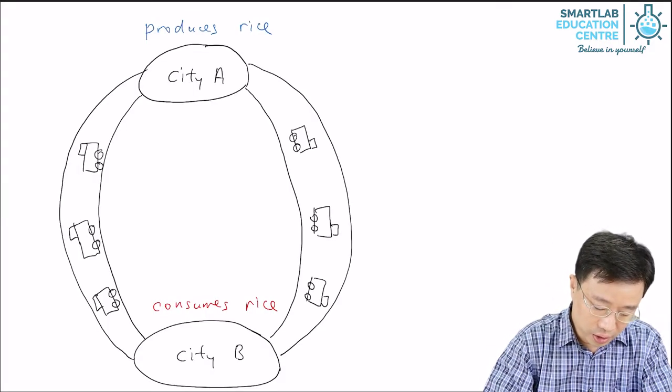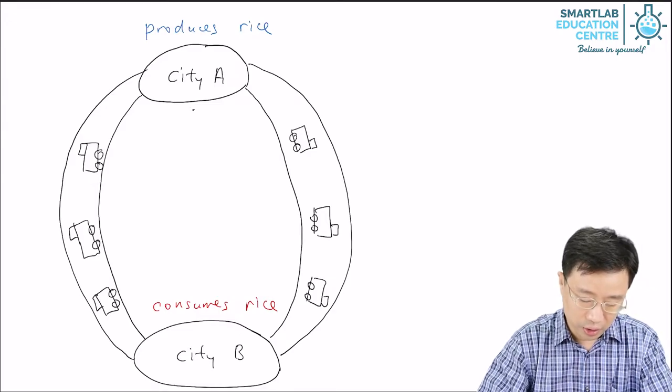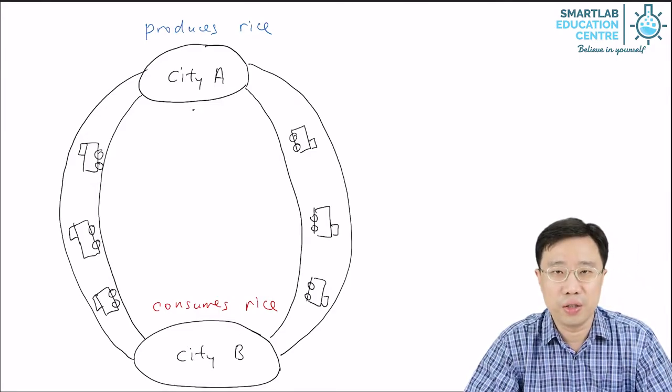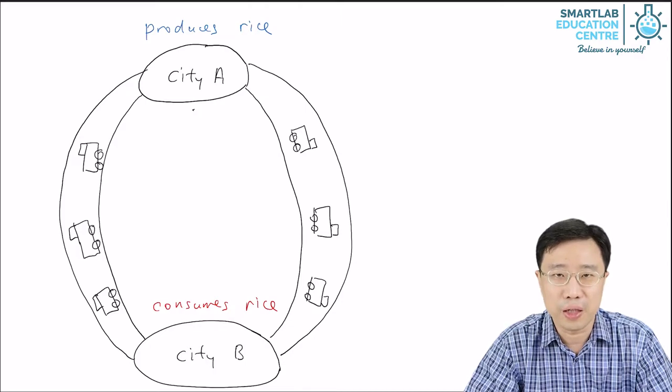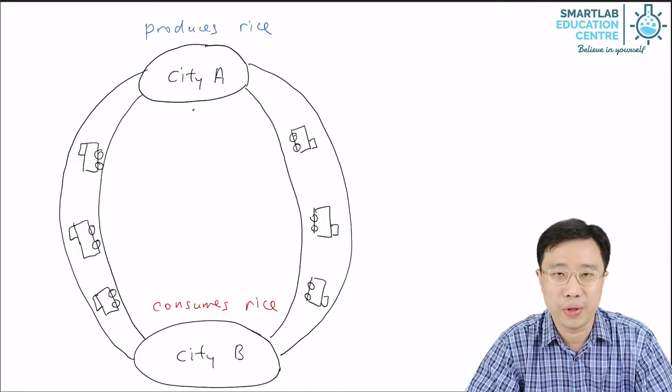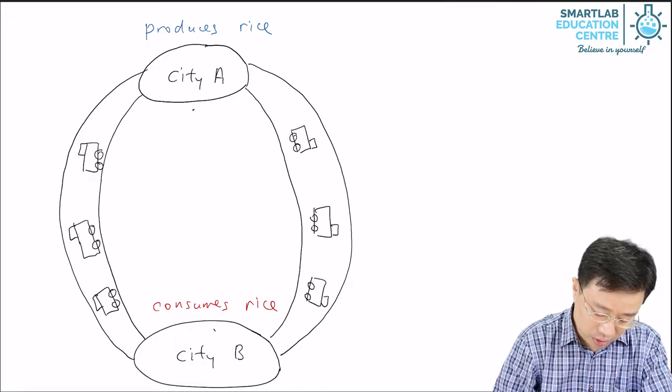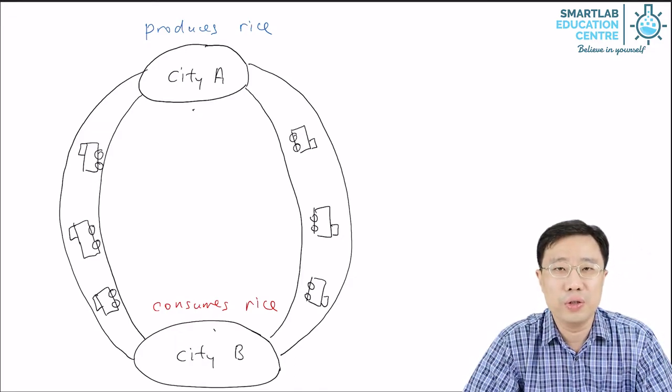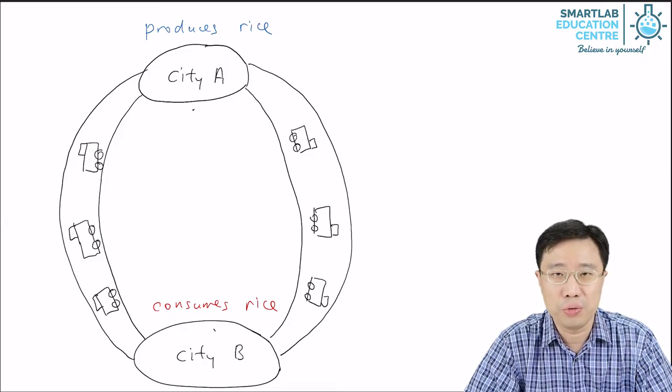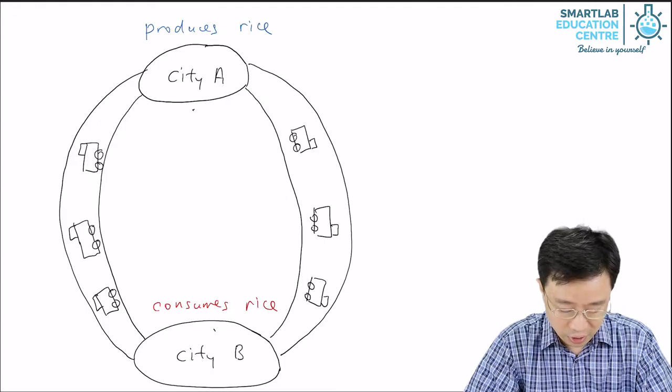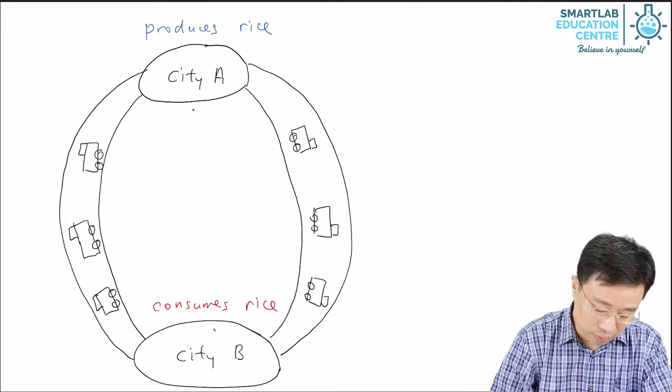So we have City A here. City A has a lot of good land and a lot of farmers, so it produces rice for export. City B is like Singapore. We don't have much land, we don't have many farmers, and so we need to import rice. So City B imports rice.